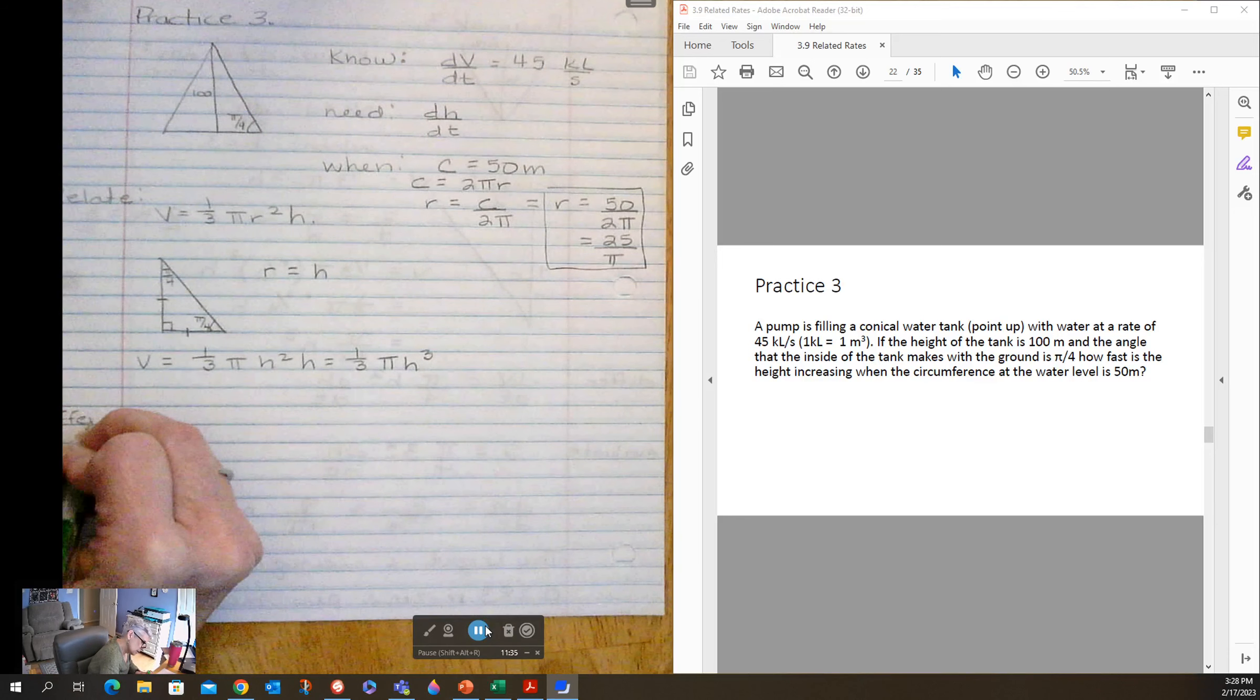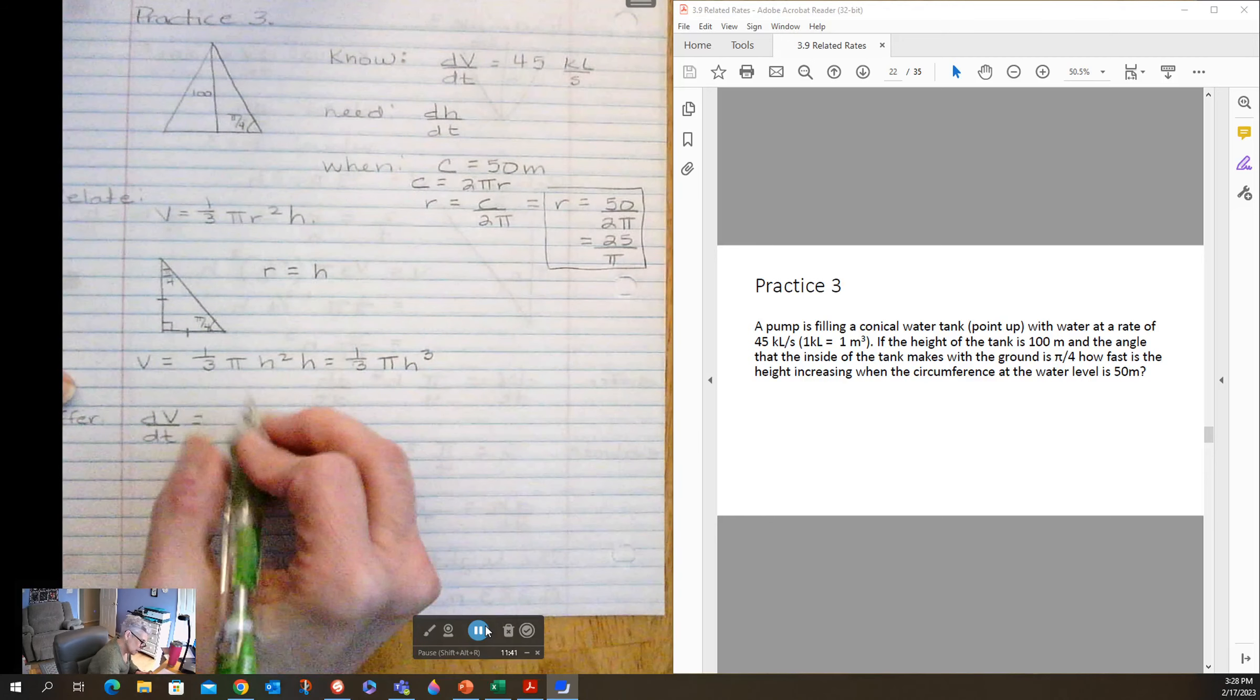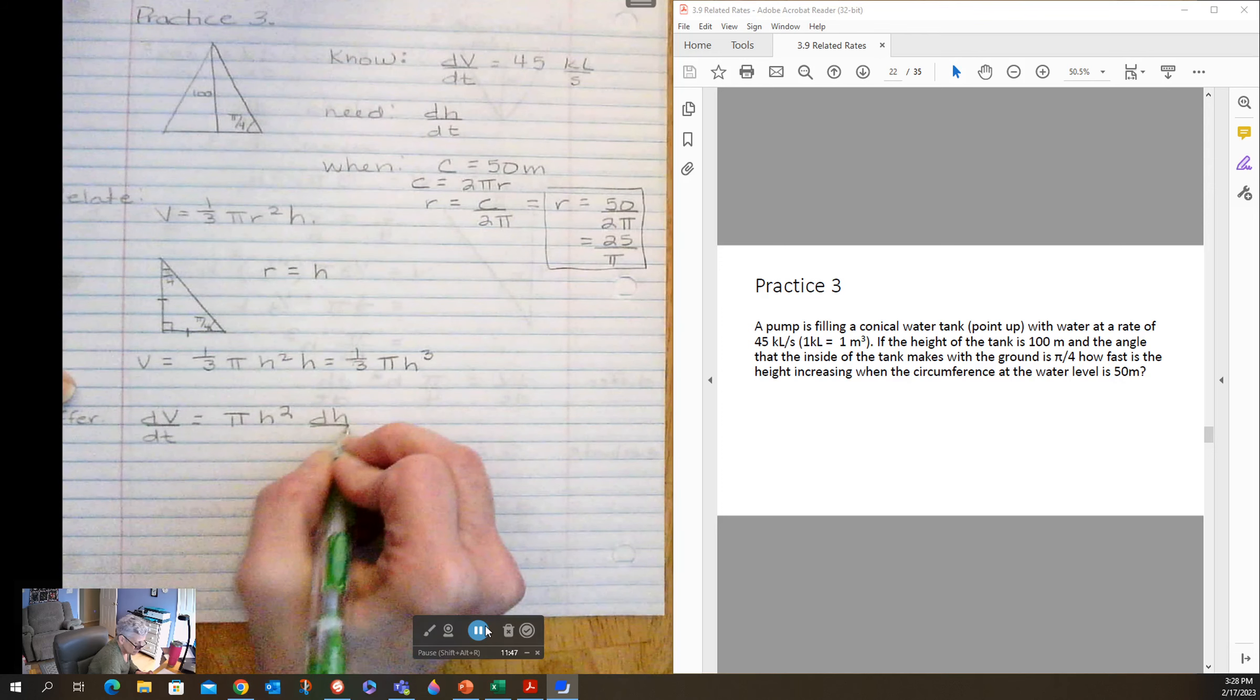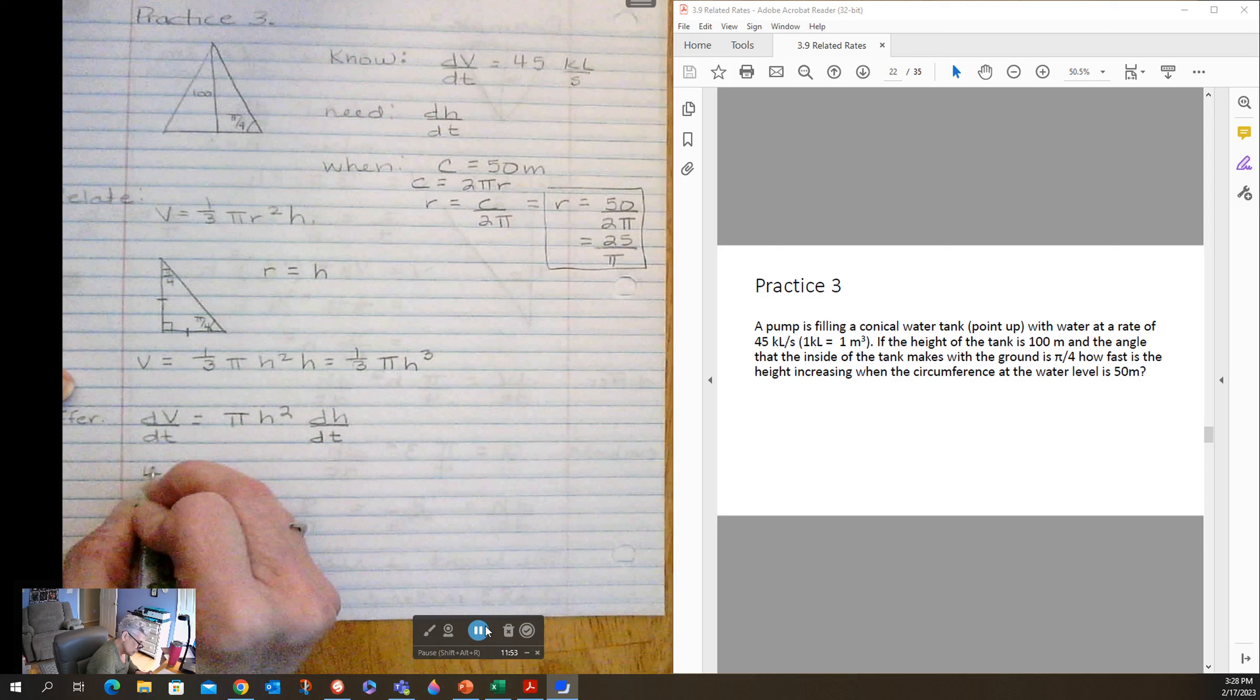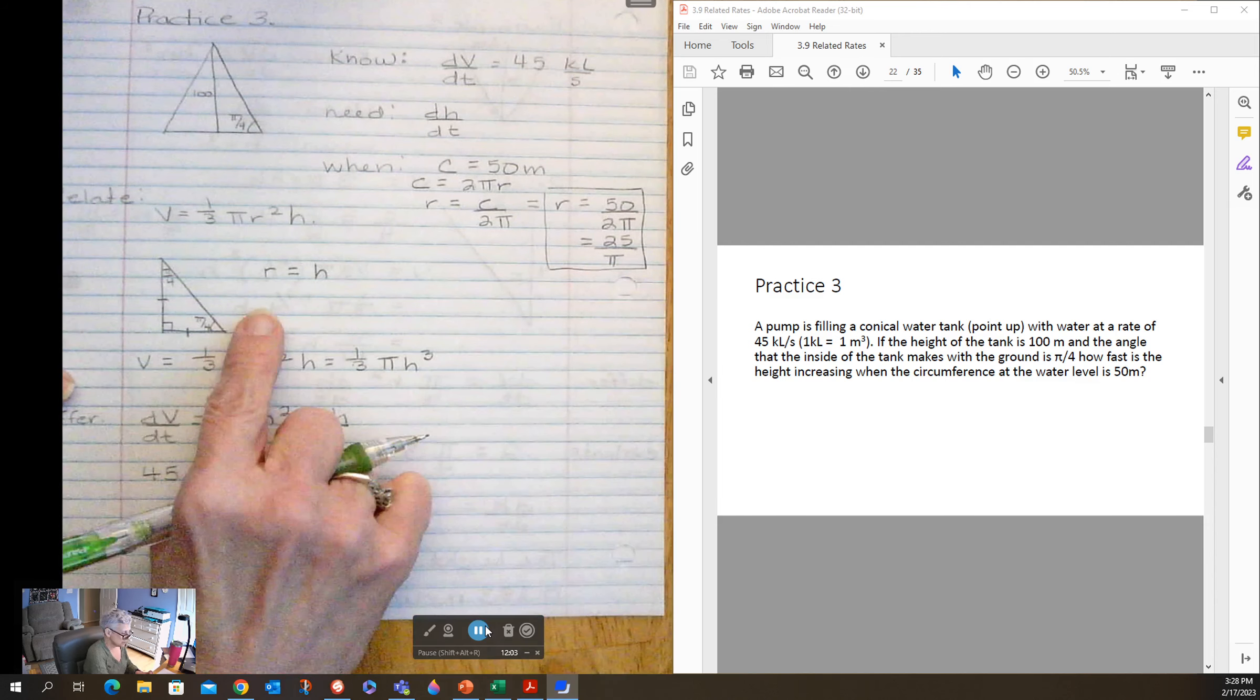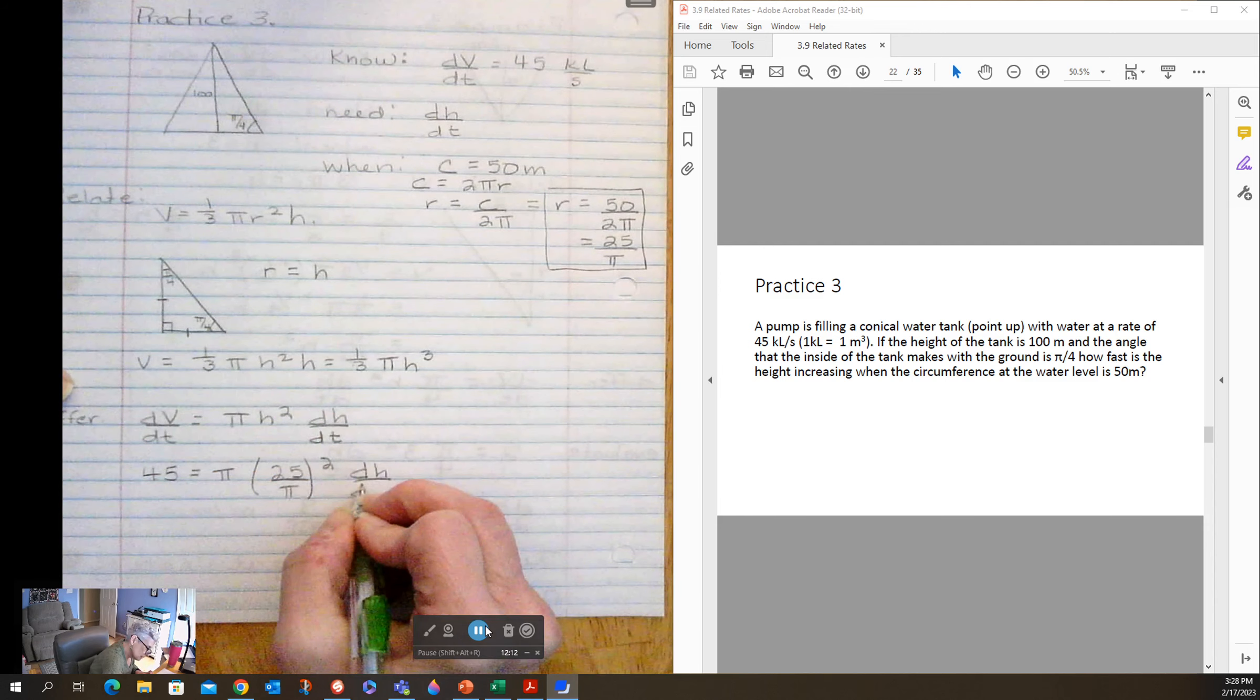So differentiate: dV/dt is equal to—three falls down—so just pi h squared dH/dt. I know dV/dt is 45. Well, it's when radius is equal to 25 over pi, but radius is the same thing as height. So 25 over pi squared dH/dt.